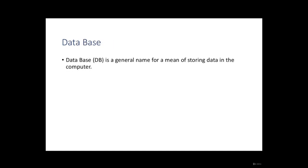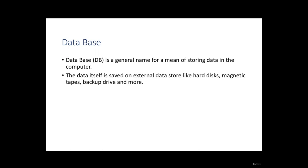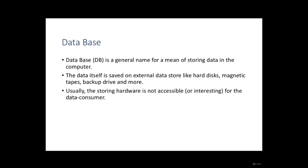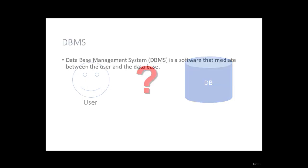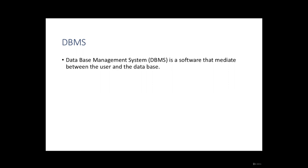A database, or DB, is a general name for a means of storing data in the computer. The data itself is saved on external data stores like hard disks, magnetic tapes, backup drives, and more. Usually the storing hardware is not accessible or even interesting for the data consumer. So the data is stored in an organized and structured way on some kind of hardware, and the user wants to use this data. We need some kind of interface — a mediator — to connect between the user and the data.